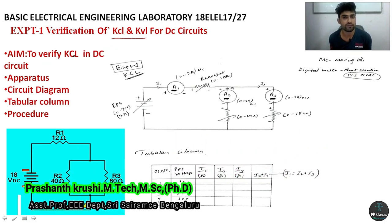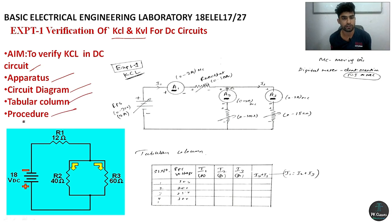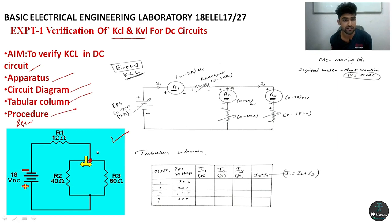We will conduct KCL first, then KVL. First, the apparatus required table and circuit diagram. Based on the circuit diagram, we will make an apparatus requirement table with columns for tableau and procedure and result. According to the statement of KCL, the algebraic sum of currents meeting at a junction is equal to zero. Also, the entering current to the junction is equal to the leaving current from the junction.